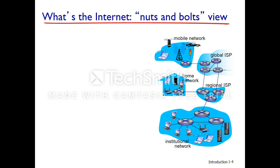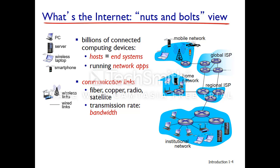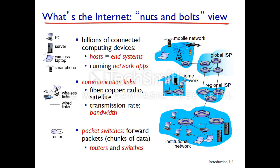What is the internet? One way you can look at the internet is in terms of a nuts-and-bolts view. The internet basically consists of billions of connected computing devices. These devices can be hosts, which are simply end systems such as a laptop, a tablet, or even a smartphone, and these will be running network applications. Between these hosts you're going to have communication links — these might be optical fiber, copper, or radio waves as you might see with Wi-Fi 802.11 or satellite links. Each link will have a transmission rate, informally called the bandwidth. In addition, you're going to have packet switches, which simply forward packets — chunks of data — and these can either be routers, which operate at the network layer, or switches, which typically operate at the link layer.